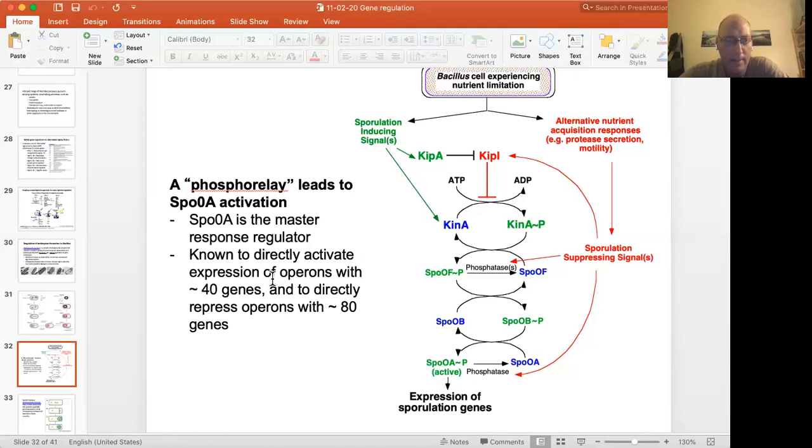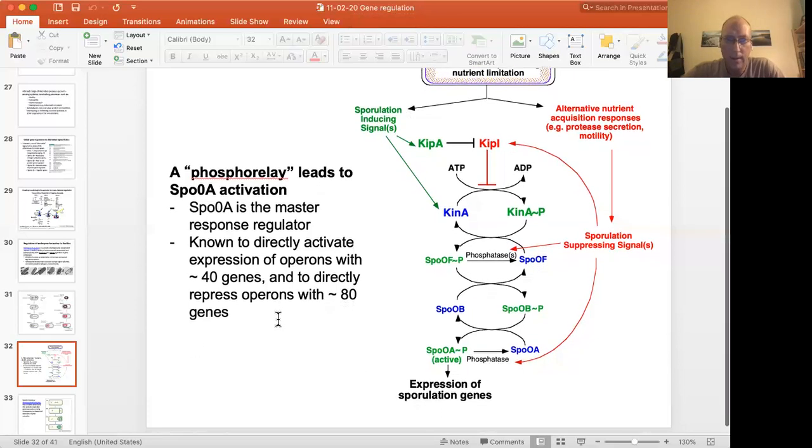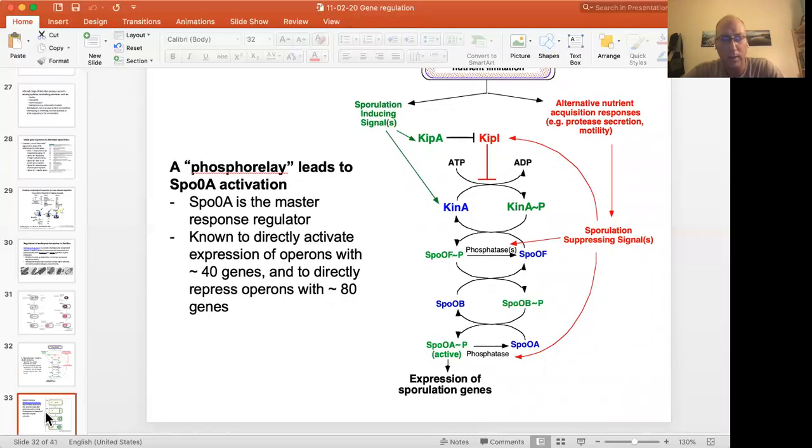And there are phosphatases that can suppress this by chewing the phosphates off of these key factors as well. At the end of all this is a set of genes that are involved in turning on all those events I showed you in the previous slide to trigger and carry out the developmental process. So like 40 genes that it directly regulates and then there's a bunch more genes that are downstream. Actually, I take that back. It activates directly the expression of 40 genes. It represses the expression of more than 80 genes. Because you can imagine if you're trying to do these things but they're not working and you decide to go down this path, you want to turn this stuff off. So things are turned both off and on by Spo0A.